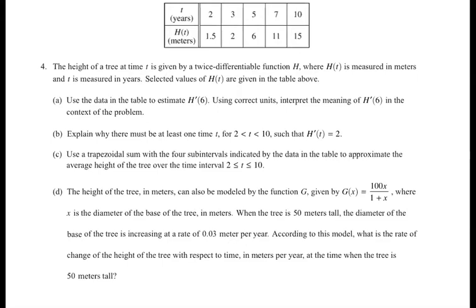The height of the tree t is given by the twice differentiable function h. That means h is continuous from 2 to 10, for sure, because it's twice differentiable. h is meters, and t is time in years. Select h, t, and table.